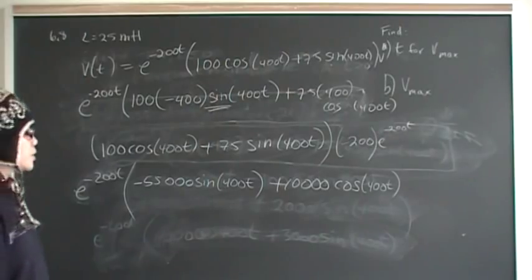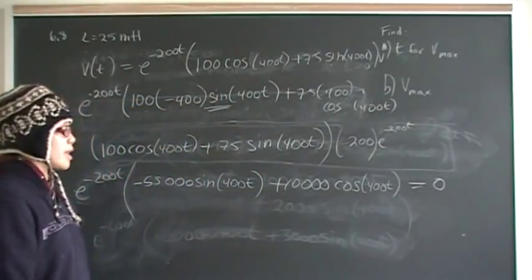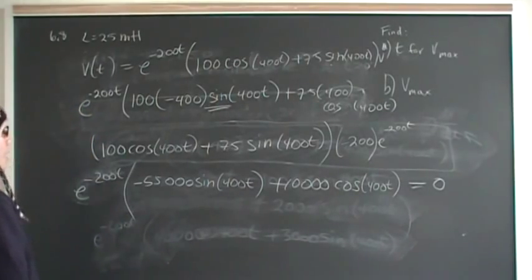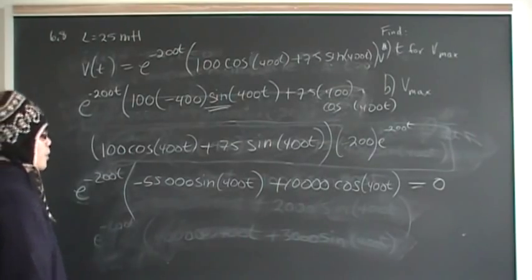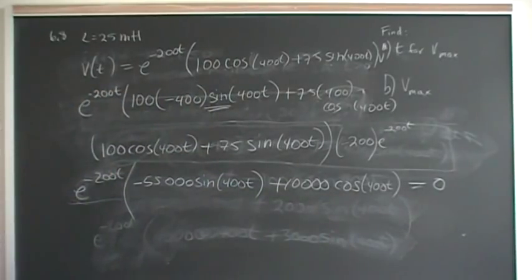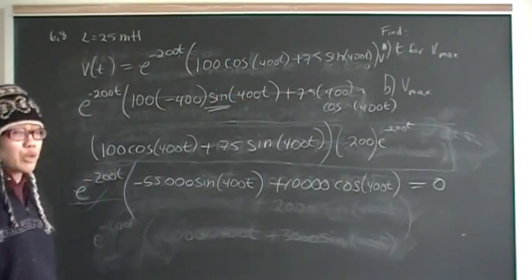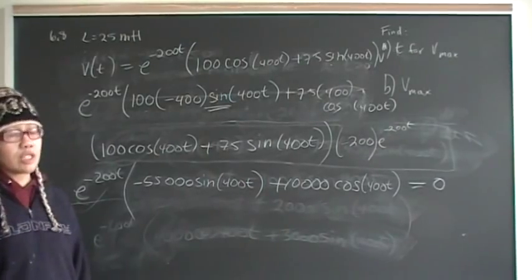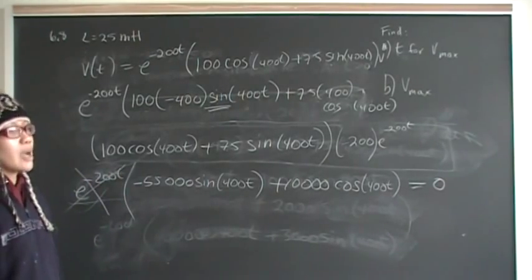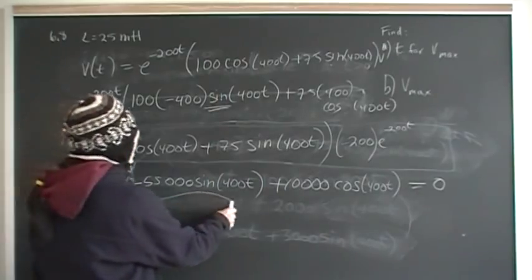Now we set this equal to zero. Setting the derivative to zero tells us either a maximum, minimum, or point of inflection — in this case, the maximum. This term equals zero when either the bracket is zero, or when e to the minus 200t is zero. The exponential goes to zero only as t approaches infinity, meaning the power is dissipated — that's trivial and we don't care about it.